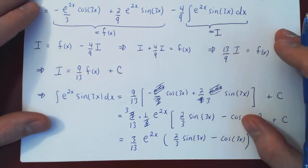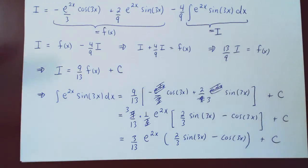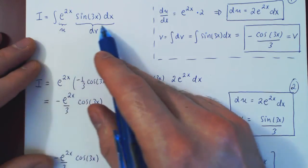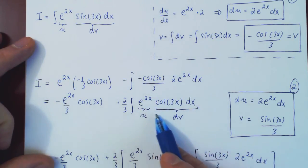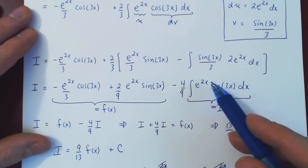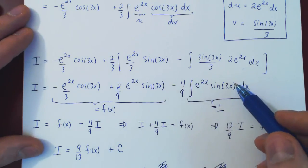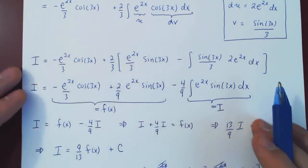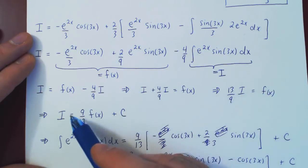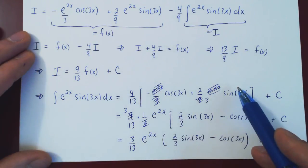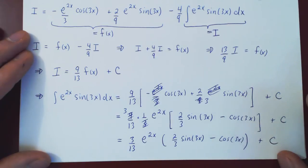The lesson here is: sometimes you have to be stubborn. Even though it looks like it's not going to work out, keep going — and in this case it really paid off. We had our integral, applied by parts and got an integral that was almost the same, applied by parts again and got back the exact same integral. The key is that we now have an equation with everything known except I, so we can algebraically solve for the integral. Then it's just a matter of substituting back and simplifying.